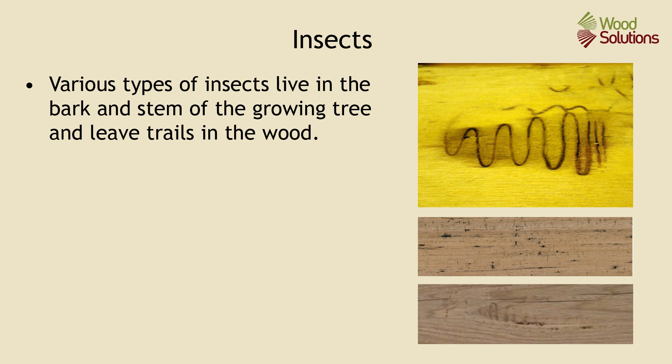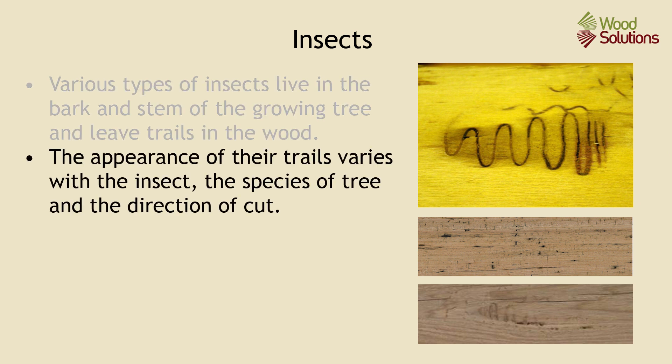Various types of insects live in the bark and the stem of the growing tree and these can leave trails in the wood. The appearance of their trails varies with the type of insect, the species of tree and the direction of cut through the wood.